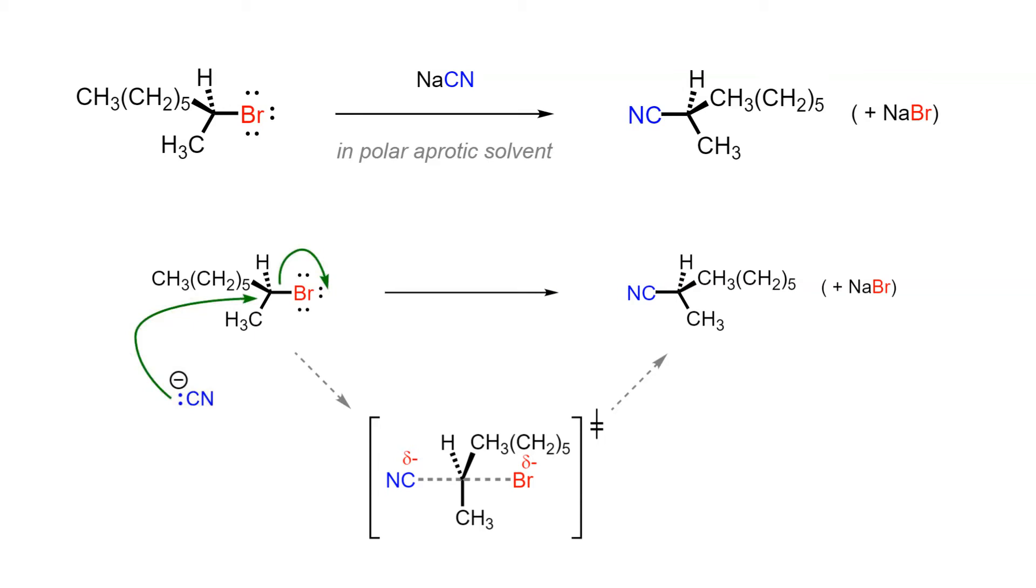As the transition state collapses, the bromide is lost from one side of the molecule and the attached alkyl groups will relax in that direction to give the inverted product.